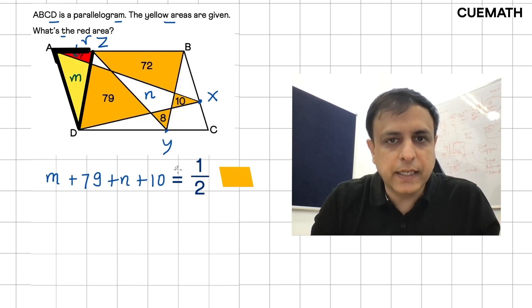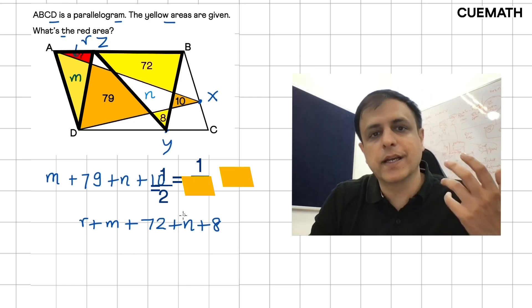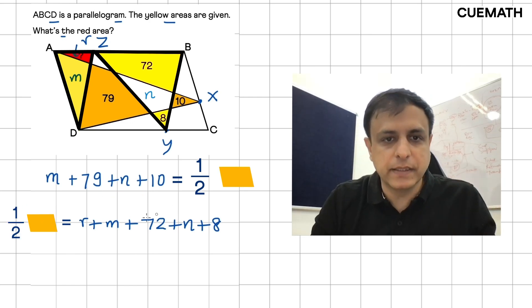And the total area of ADZ and BZY, which is R plus M plus 72 plus N plus 8, this will also be half the area of the parallelogram ABCD.